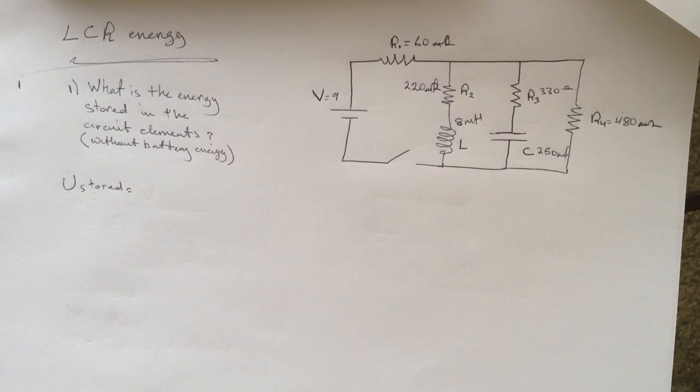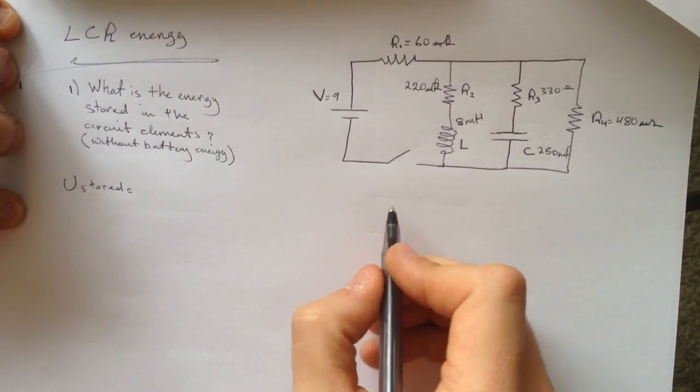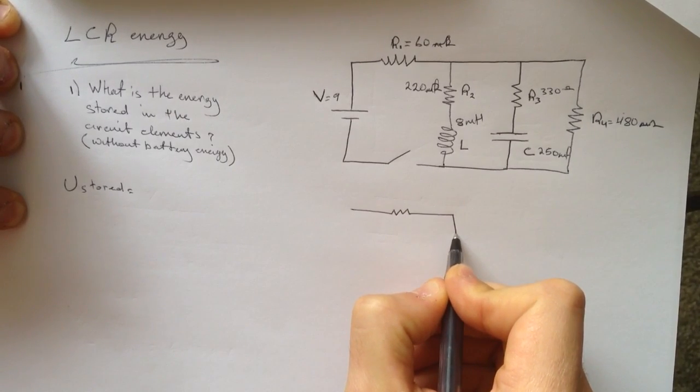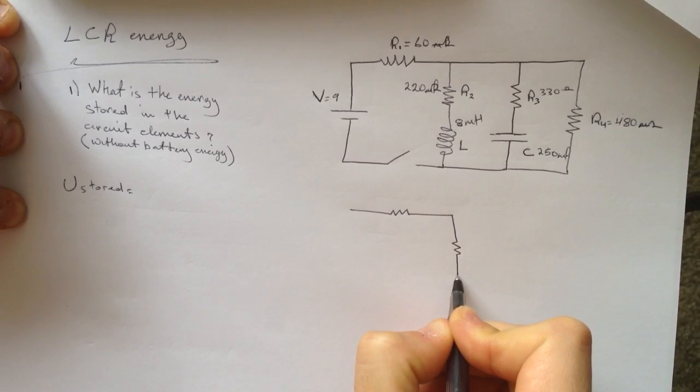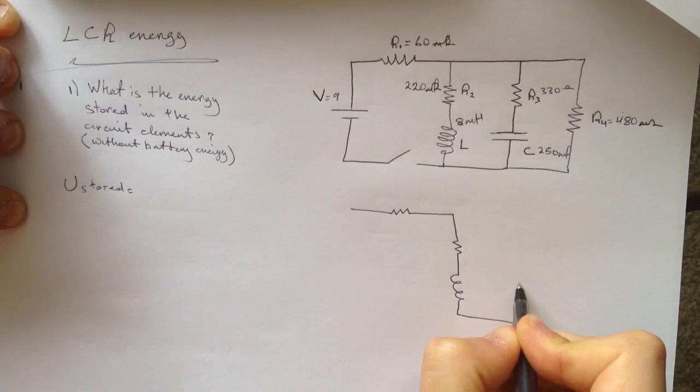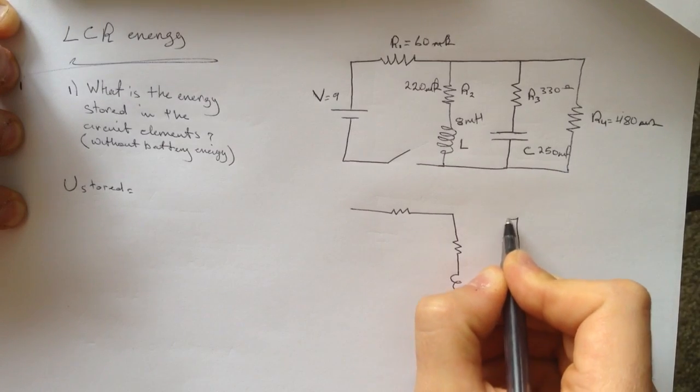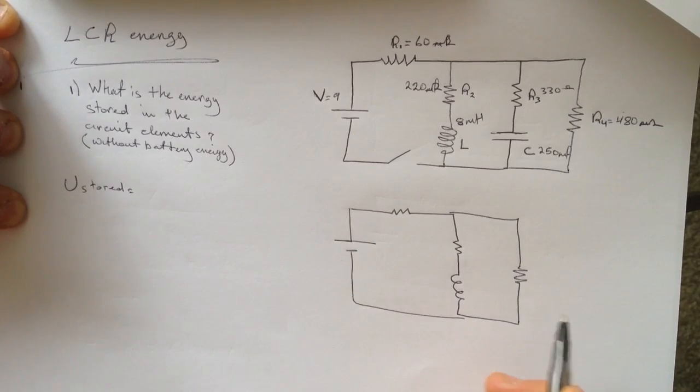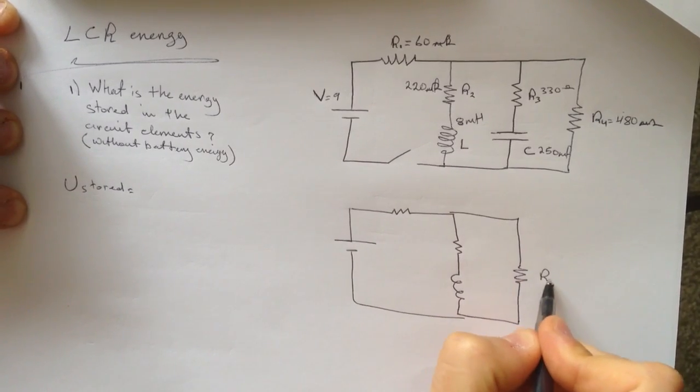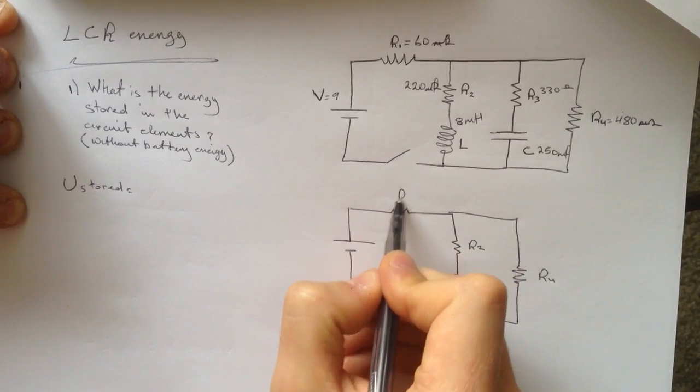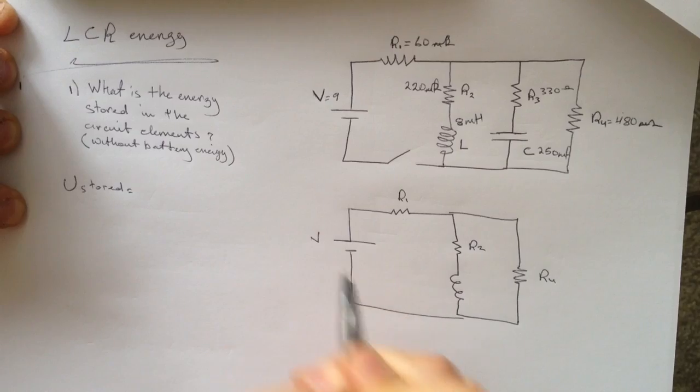So the circuit would look like now after a long time, this resistor... this is R4, this is R2, this is R1, this is the battery voltage.